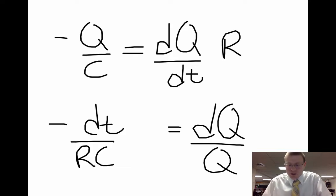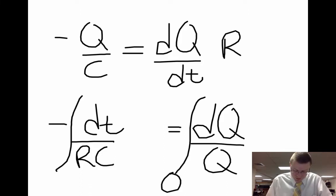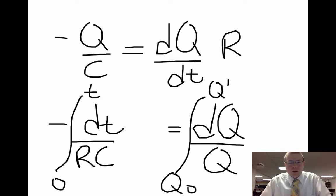If I want to find how the charge changes per second, I'm going to have to integrate from having the original charge to some charge at any time T. We'll call that Q'. And for our time, we're going to do that from zero time to any time after the switch has been closed.